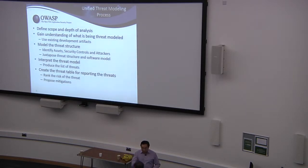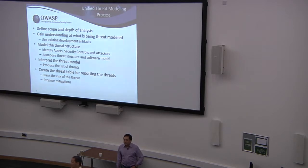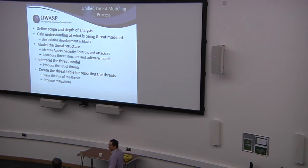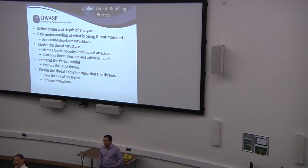So the threat modeling approach — we built a lot of this based on the Cigital process but adapted it for Intuit. The first thing is defining scope. We found that people would threat model the entire system when the development team was only changing one particular piece. Then we model the threat structure — looking at assets, the controls protecting those assets, and the attacker profiles. That was straight out of the Cigital threat modeling process.